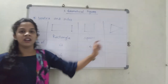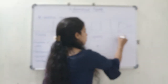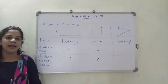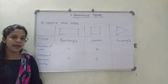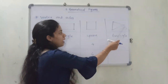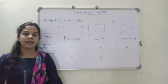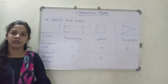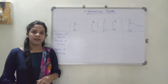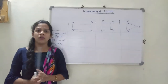Now we will go for the third geometrical figure. Can you tell me which one this is? Yes, it is called a triangle. How many sides are present in a triangle? Yes, there are 3 sides: 1, 2 and 3. Just look at this picture and tell me how many corners, how many vertices are here? Yes, there are 3 vertices.